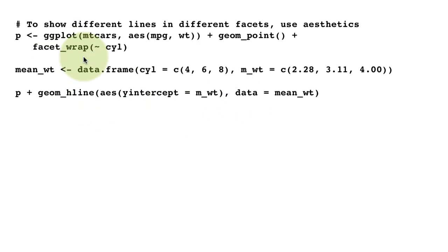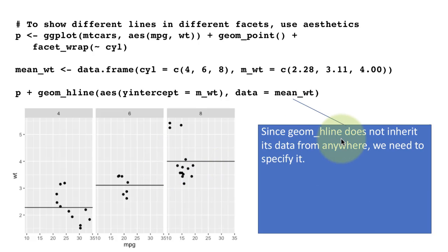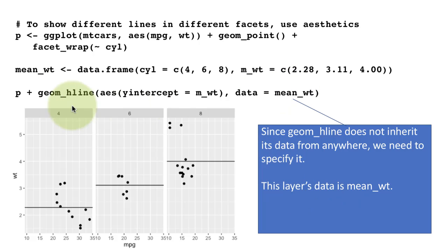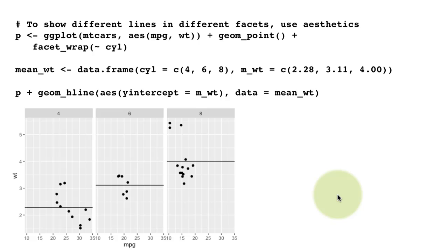Because the main plot is faceted by cylinder, the added geom_hline layer is also faceted by cylinder. For four cylinders it picks up the corresponding mean weight and draws the line there; similarly for six and eight cylinders. Since geom_hline does not inherit data automatically, specifying the data frame explicitly is essential. This is a tricky technique that merits careful examination to understand how it's actually working.